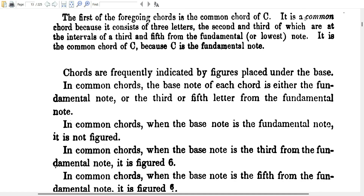The first chord here is the common chord of C. It's a common chord because it consists of three letters, the second and third of which are at intervals of a third and a fifth from the fundamental or lowest note in the chord. It is the common chord of C, or C-sol-fa-ut in the Baroque naming system. C-sol-fa-ut because C is the fundamental note.